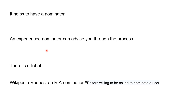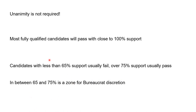It also helps to have a nominator — one of the reasons I'm talking to you is that we recognize many new editors have emerged in Africa and there isn't yet a network of experienced nominators and administrators in the African community. An experienced nominator can advise you through the process. There is a list of potential nominators at Wikipedia's RfA nomination page under 'editors willing to be asked to nominate a user.' Check that those people are still active, and ideally choose a nominator who has operated in similar areas to yourself.